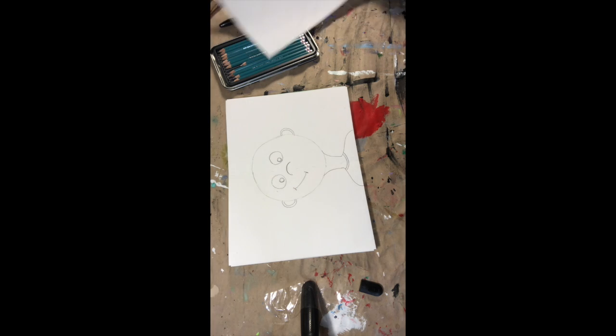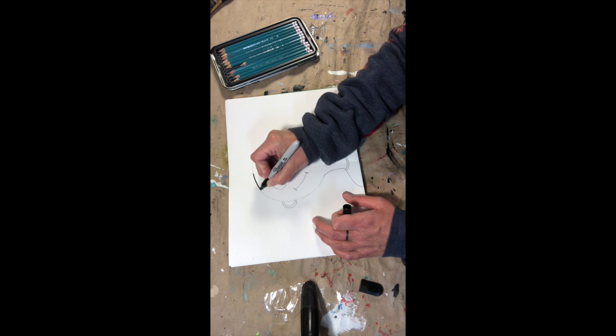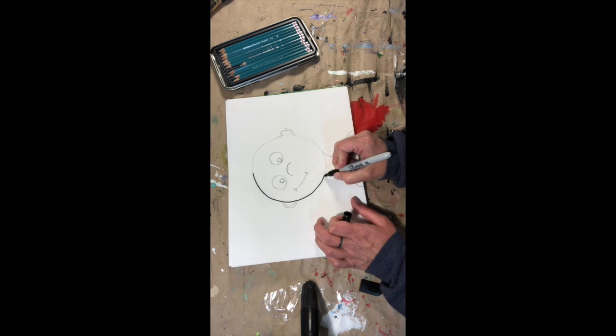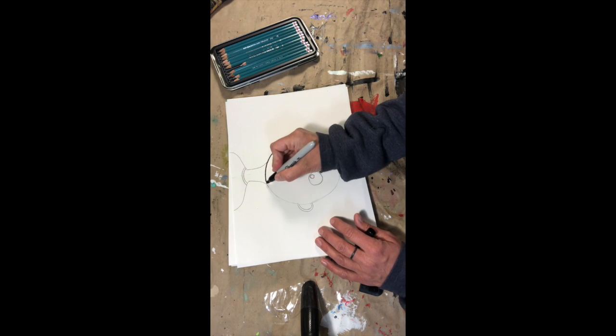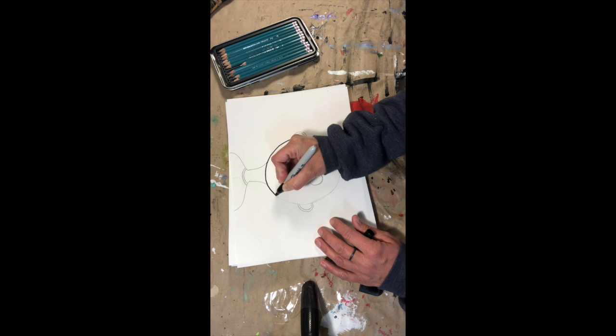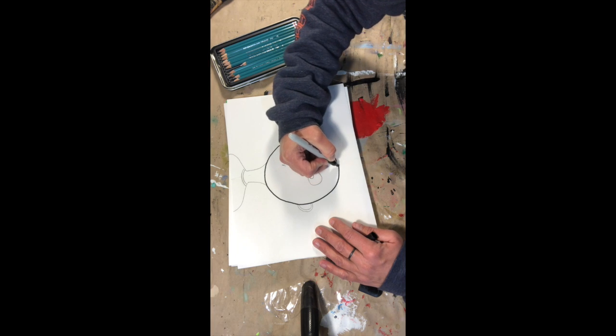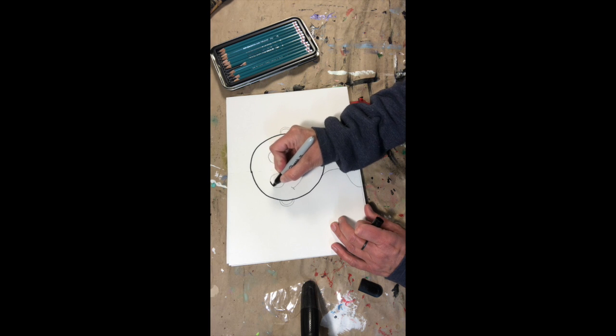So when you're done, you can go ahead and with a Sharpie marker start outlining everything you've done. And I usually do this when I'm waiting for paint to dry. So I'll paint a picture and then I'm waiting around. I'll just have some fun drawing some characters.